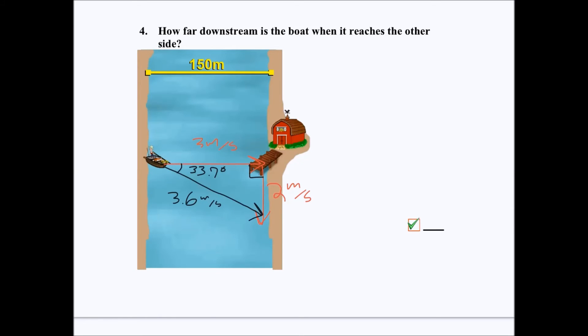So on the last part of this problem, it asks how far downstream is the boat when it reaches the other side? So you have to know here before you can even start the problem that we are talking about this distance right here. I'm going to call it ds for d south, right? And that's also the initials of some cool guy I know. But once you figure out that that's what you need to solve for,